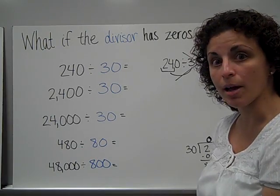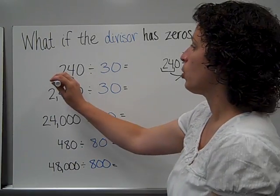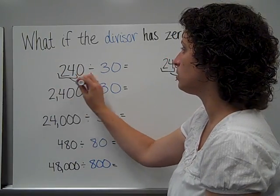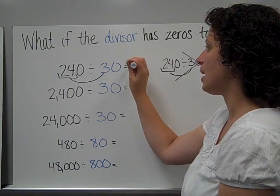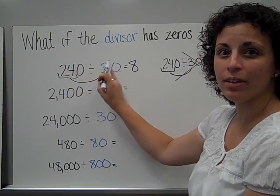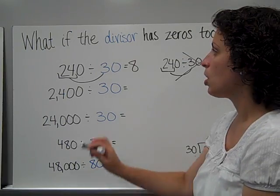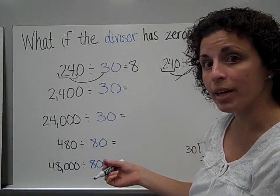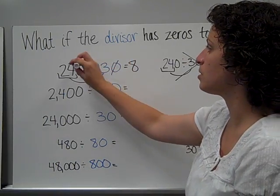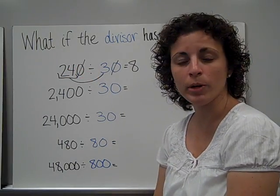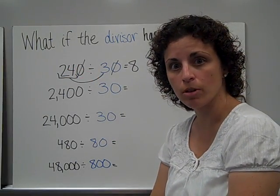So there has to be something else that happens, and here's what it is. We use our basic fact, 24 divided by 3, which is 8. But we do not add these two zeros because it made a number too large. These zeros are matching place values. This is in the ones place, and this is in the ones place. And so I'm going to get rid of both of those by marking them out.